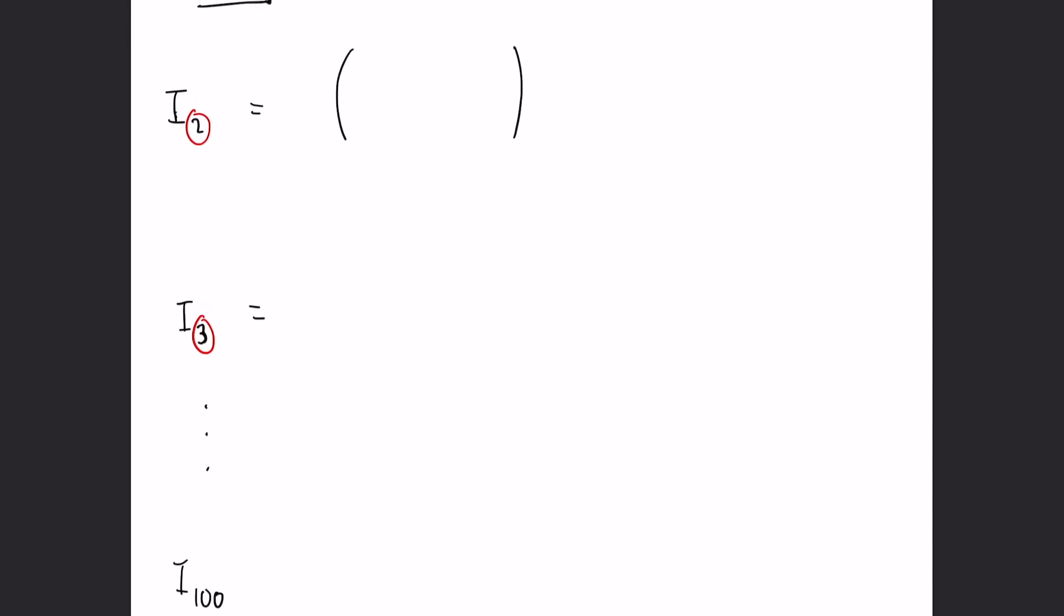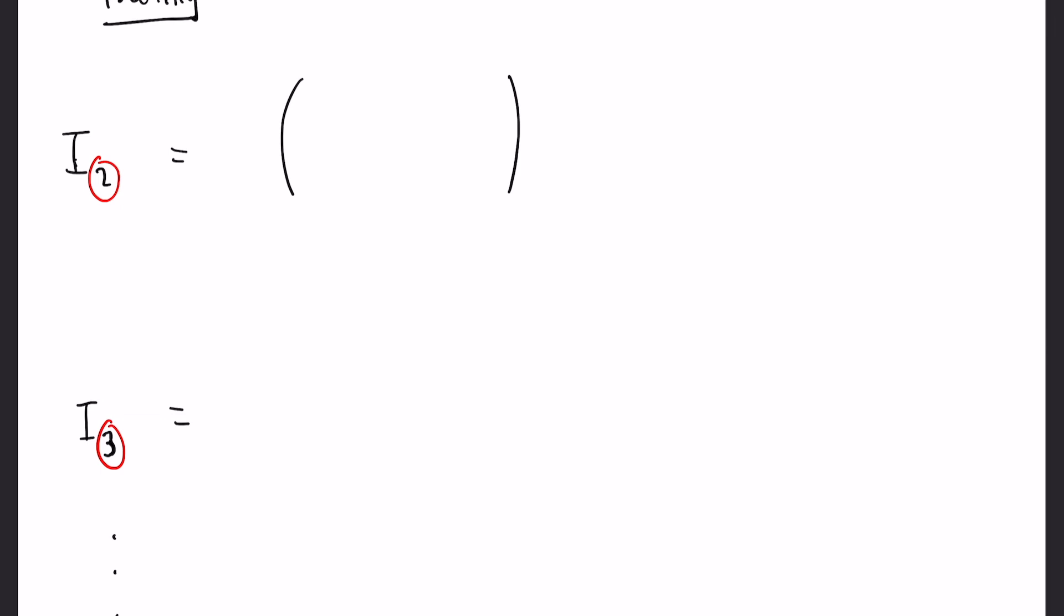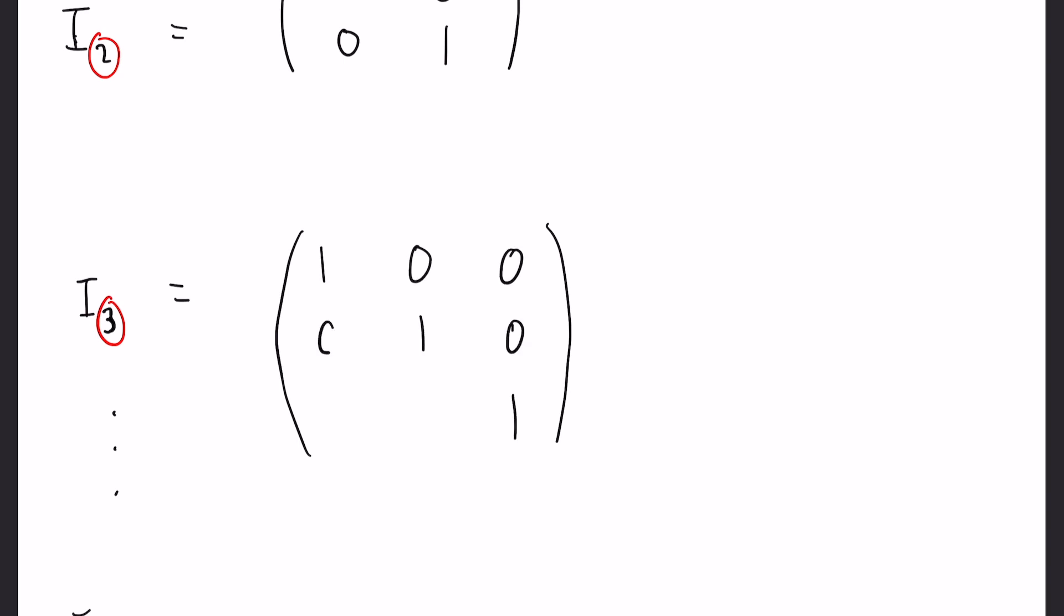I₂ is simply a 2x2 matrix with ones down the diagonal and zeros everywhere else. I₃ is a 3x3 matrix - three rows and three columns - again with ones down the diagonal and zeros everywhere else. Anything multiplied by the identity matrix doesn't change at all.